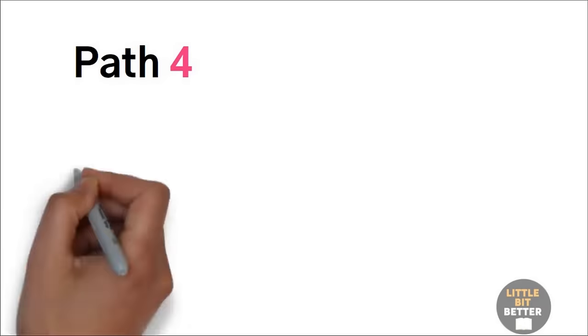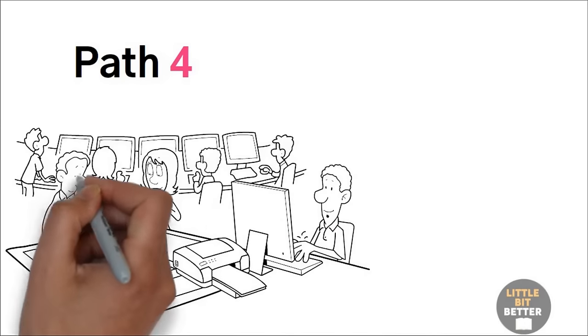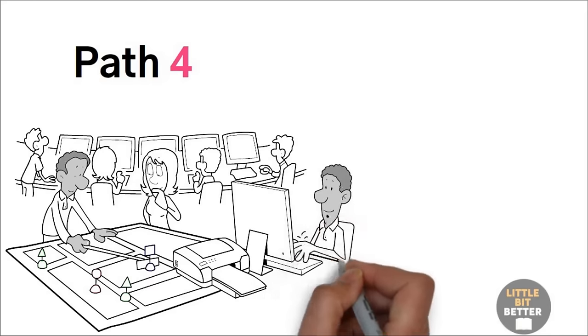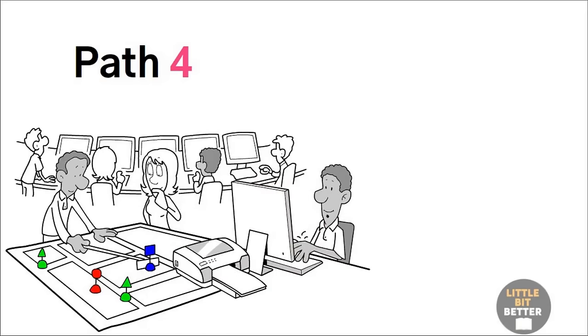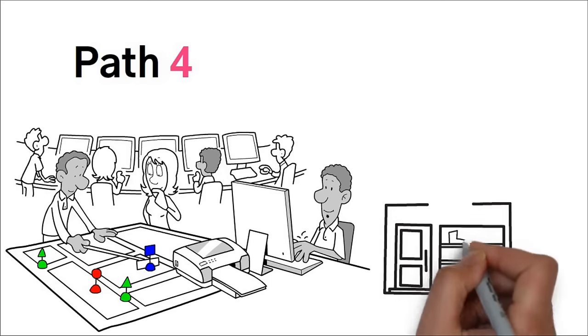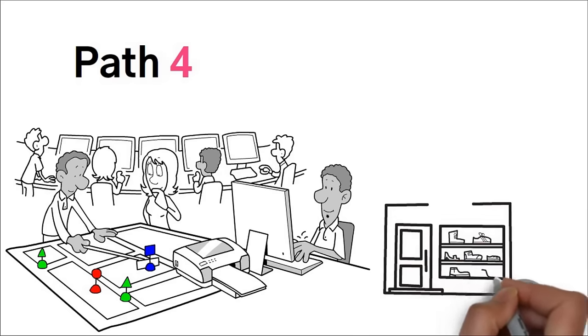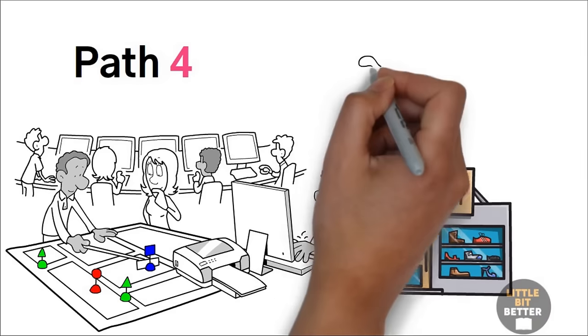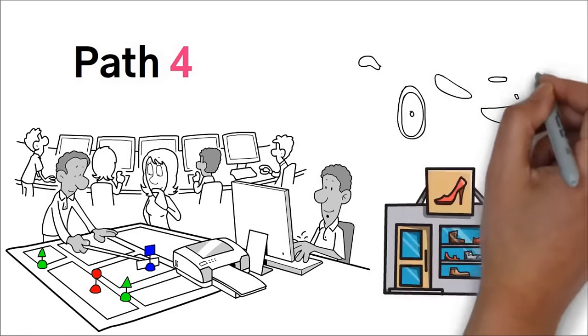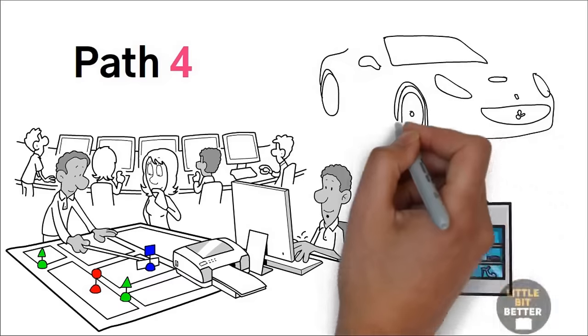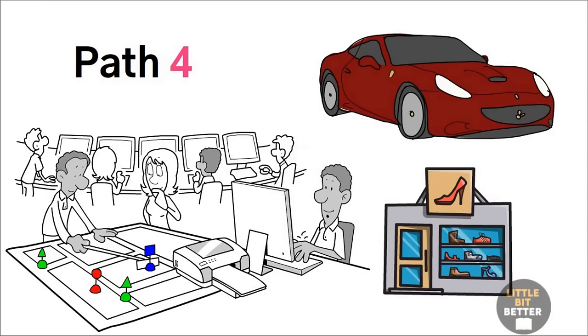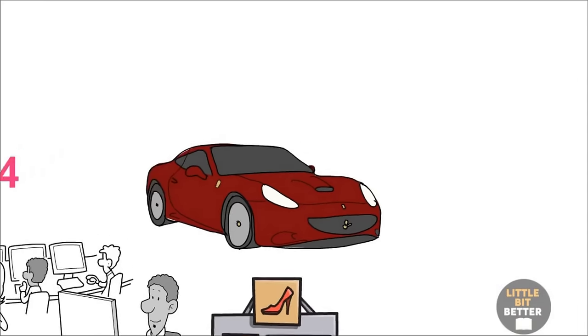Path number four, look across strategy groups within the same industry. A strategy group is a group of companies within an industry that pursue a similar strategy. For example, online shoe stores versus physical shoe stores. They both serve the same need, shoes. Another example, the luxury car market versus the economy car market. Both fall within the same overall industry, automobiles, but they pursue very different strategies for serving the same need. And because of that, they don't see each other as competition.